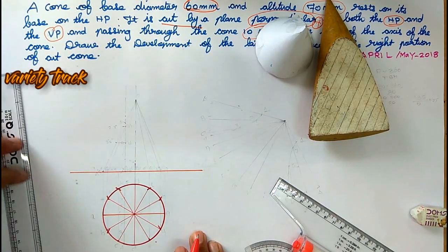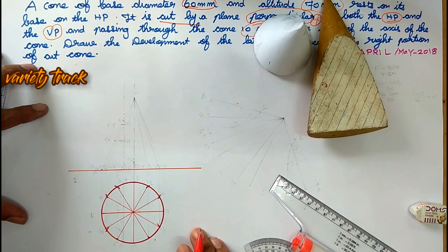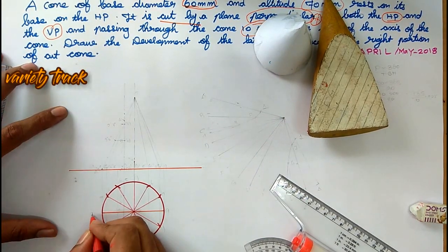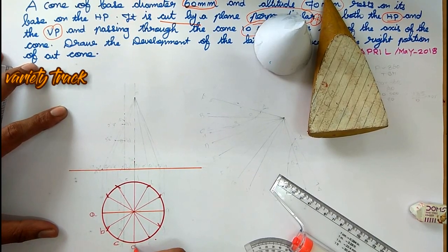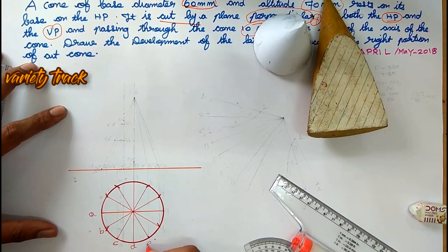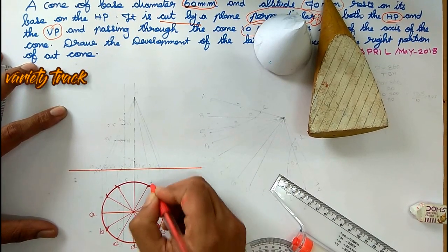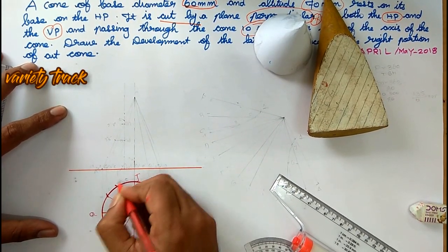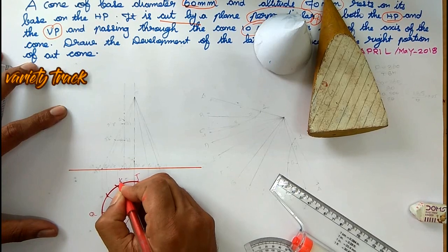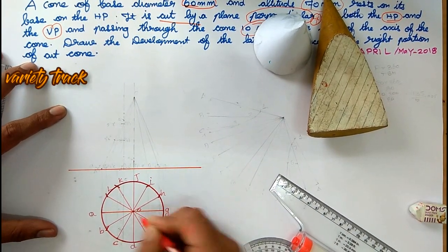We have points: this is B, this is C, this is D, this is E, this is F, this is G, this is H, this is I, this is J, this is K, and this is L. So again A is coming — this is the generator line.